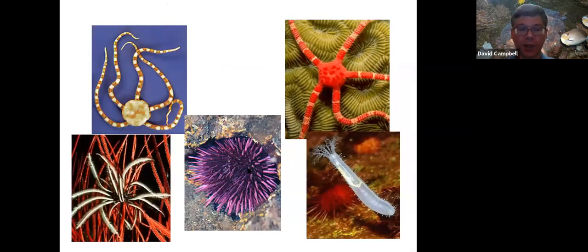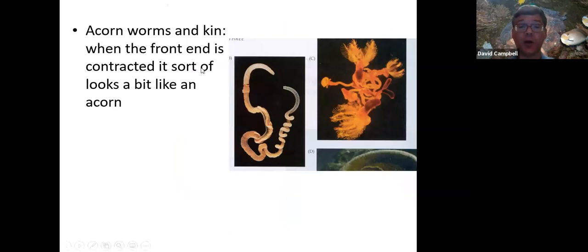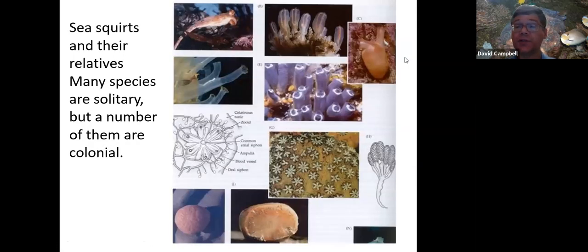Here are a couple of brittle stars, a sea urchin, another sea cucumber in front of the sea urchin. Down here is a stalkless crinoid — a feather star — which looks like it's on a soft coral. Here's an acorn worm — if the head end is scrunched up instead of stretched like that, it sort of looks kind of like an acorn. Here's a colonial relative of the acorn worms. Sea squirts — there are a number of types; some of them form colonies with these kind of star patterns on them. There are also some that are planktonic and can actually squirt water to propel themselves around a bit.